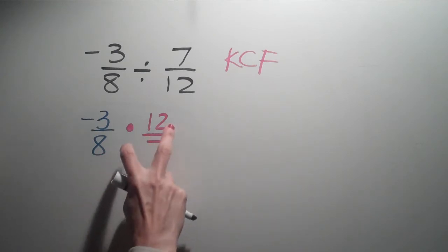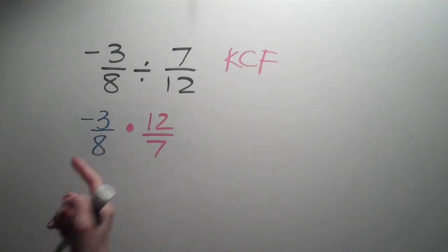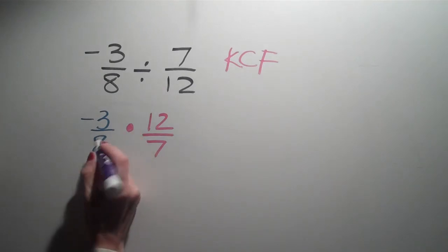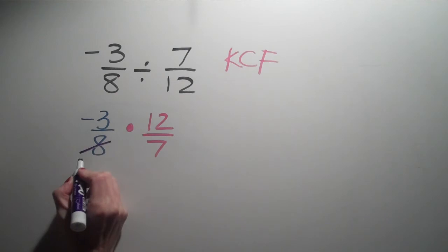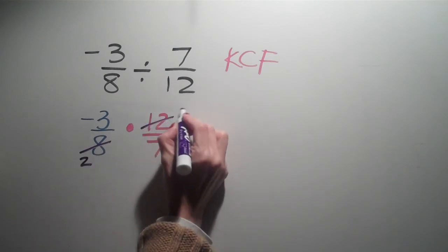So we look at the 8 and we look at the 12 and we say, well, what do those two numbers have in common? I know I can divide by 2, but I also know I can divide by 4. So if I divide by 4, 8 divided by 4 is 2, and 12 divided by 4 is 3.